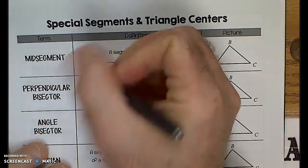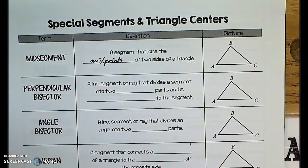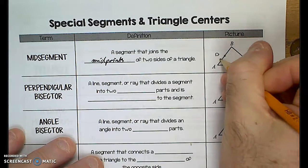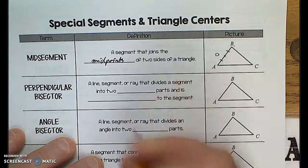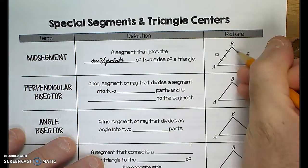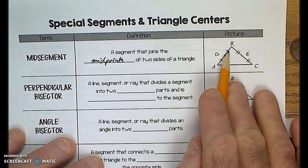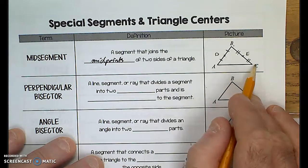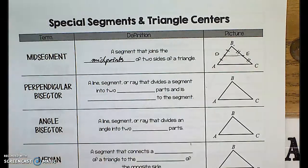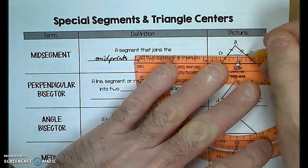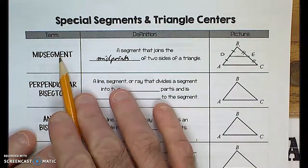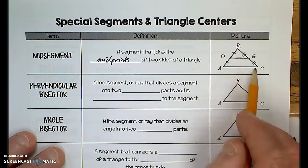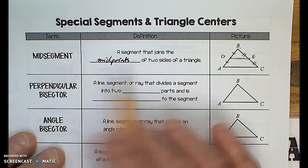A mid-segment joins the midpoints of two sides of a triangle. So I'd place point D as the midpoint of AB, and point E as the midpoint of the other side — using two tick marks so as not to imply those two sides are equal, only that BE is congruent to EC. If I connect those with a straight edge, I have drawn the mid-segment, and we're going to derive interesting properties from the two triangles now formed.